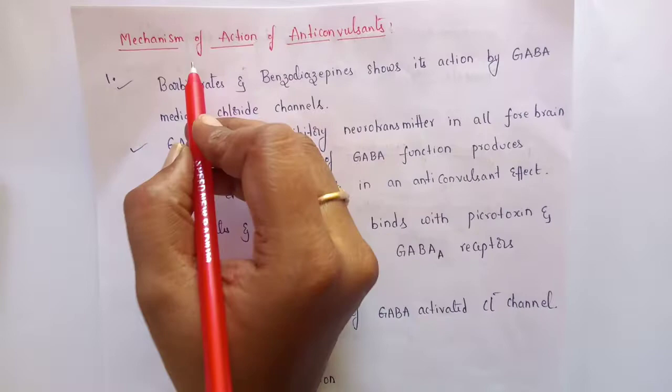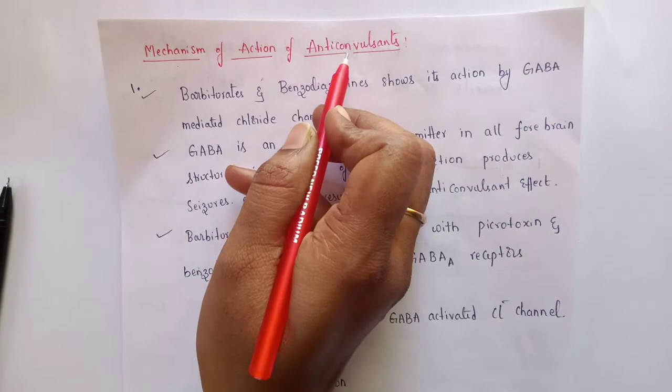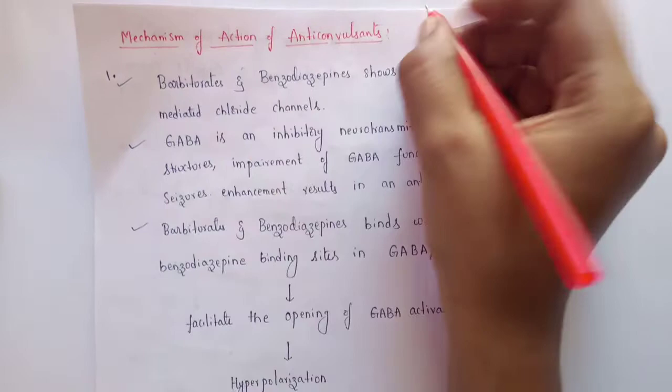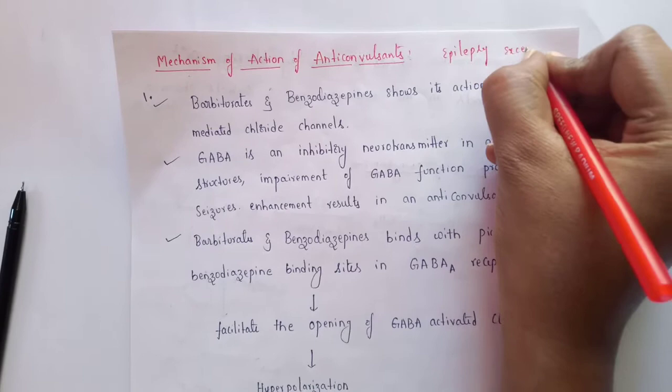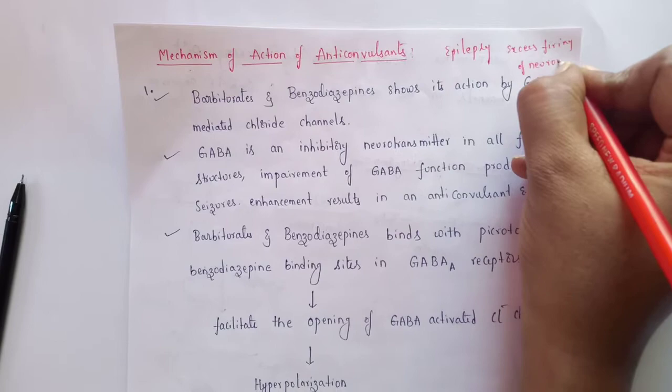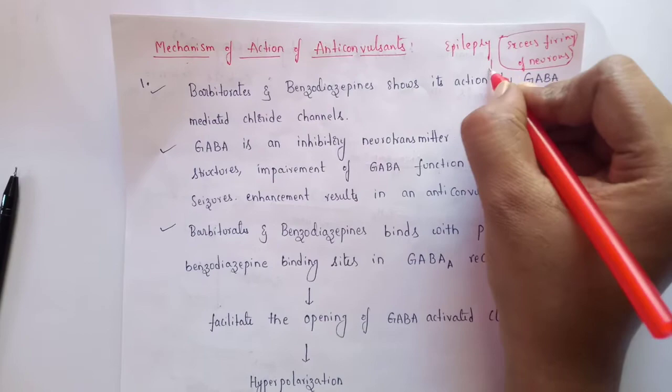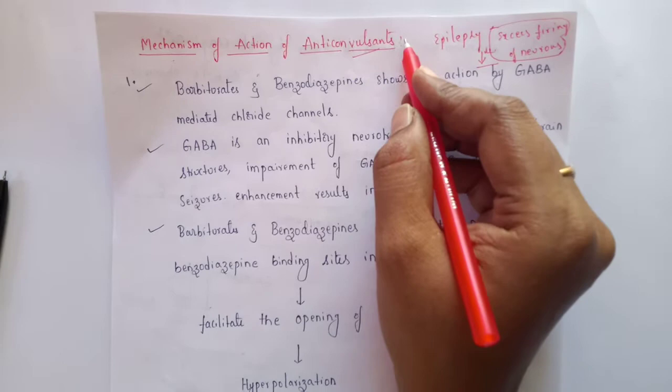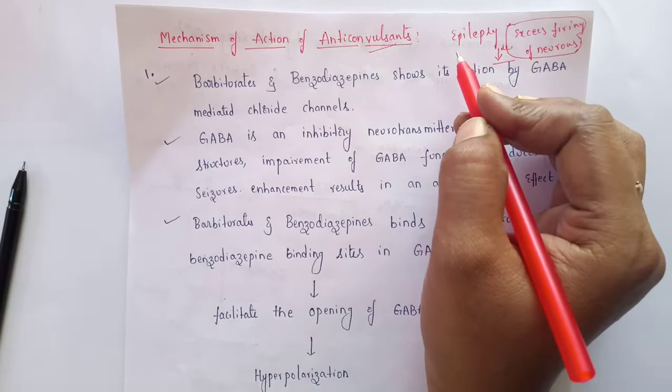An important parameter for anticonvulsants is their mechanism of action. Epilepsy is caused by excess firing of neurons. Our target is to reduce or inhibit that firing to achieve an anticonvulsant effect. There are seven classes of drugs, and each class shows its individual mechanism of action.